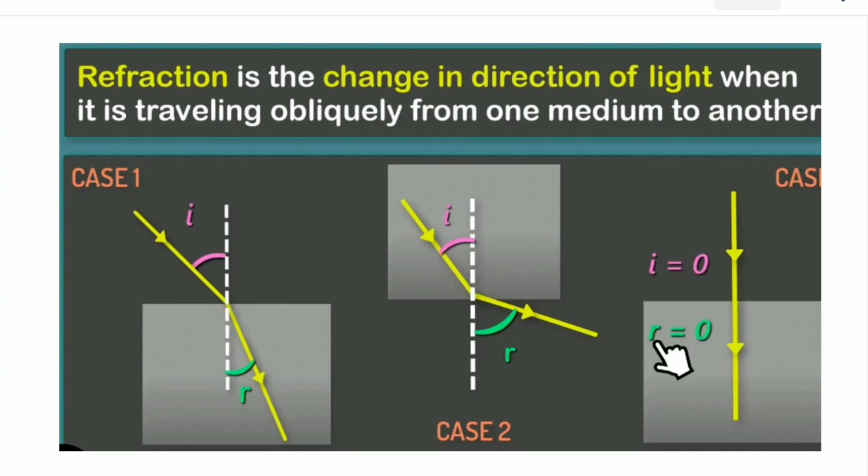When the angle of incidence is zero, the angle of refraction is also zero. The light travels from one medium to another in a straight line. But the speed changes.